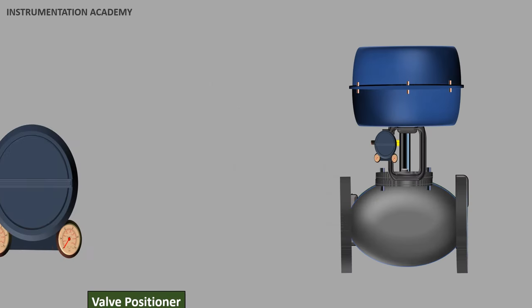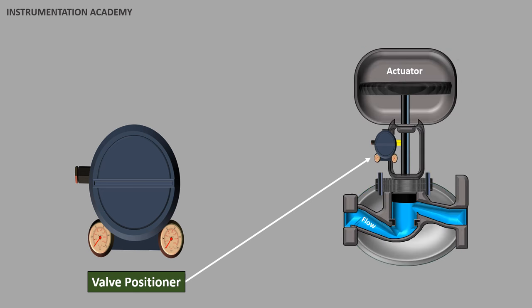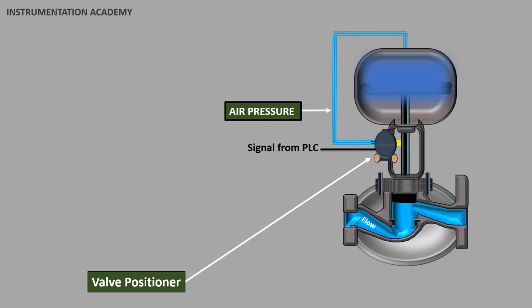Valve positioner. As the name indicates, control valve positioners are devices that help in positioning the actuator of the control valve by increasing or decreasing the air pressure on the actuator. They are generally mounted on the side or top casing of the actuator.